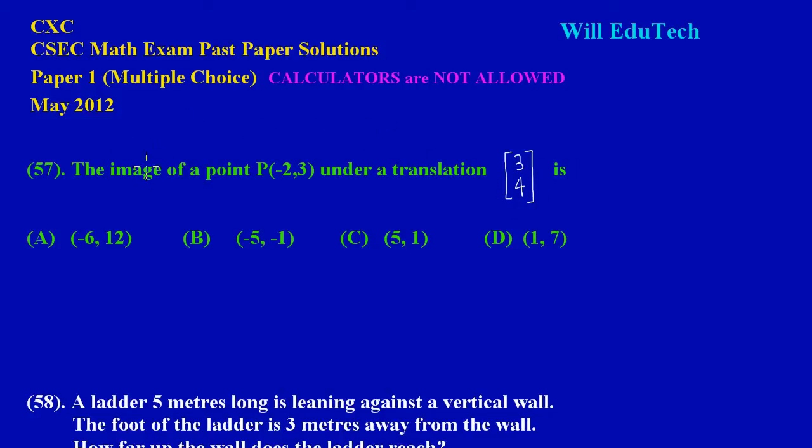If you notice, they're asking us to find the image and they have given us the object point. So basically what they have given us here is our object and they have given us the translation vector.